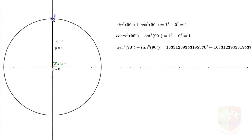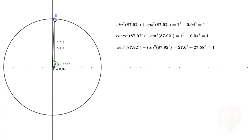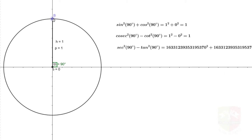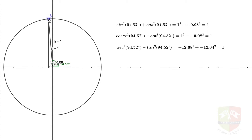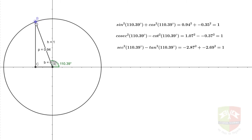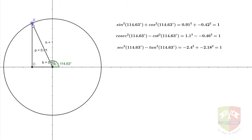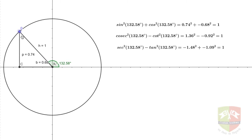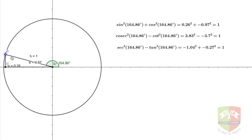Now when theta is 90 degrees, tan theta is not defined, so the identity will also not be defined here. Hence, barring those values of theta where the trigonometric ratio is not defined, everywhere else the identity holds. You can see now I am in the second quadrant, and the value remains the same.